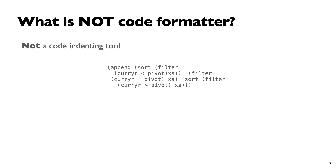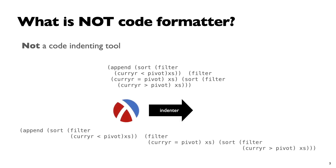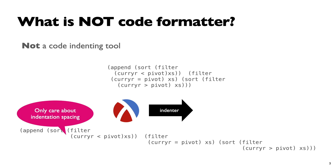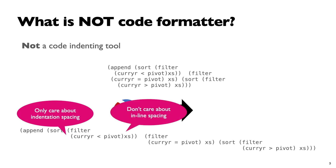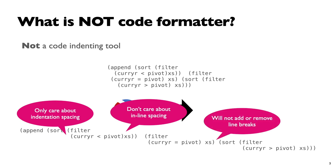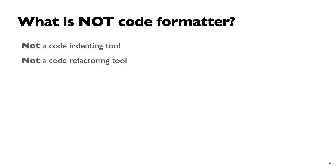Now, what a code formatter is not: it's not a code indenting tool. Racket already has a code indenting tool, and it will indent code, but it only handles indentation — it will not care about inline spacing, and it will not add or remove line breaks. It's also not a code refactoring tool. Yesterday, Jack talked about these impacts — there's a code refactoring tool.